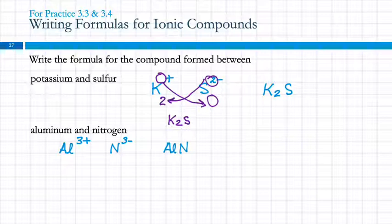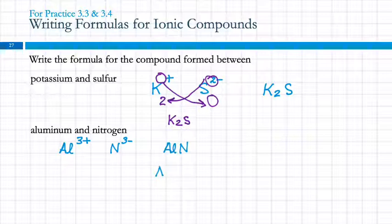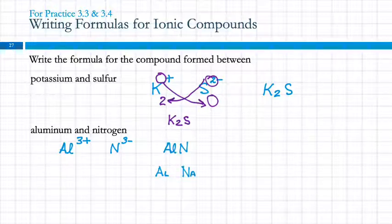A note about handwriting: when writing words you can use whatever capitalization you like, but when writing chemical formulas you must use capitals and lowercase letters correctly. Aluminum is Al — capital A, lowercase l. Writing a capital L is not acceptable. Sodium is Na — the a must be lowercase. You can write other things in all caps if you want, but not element symbols.